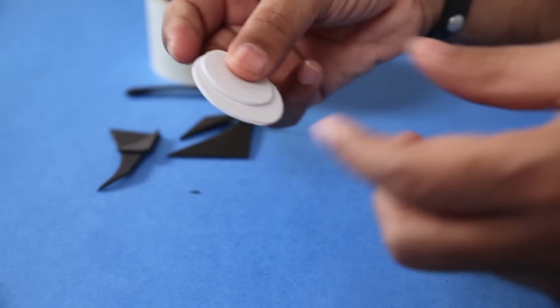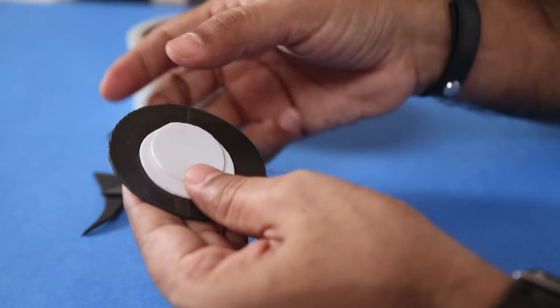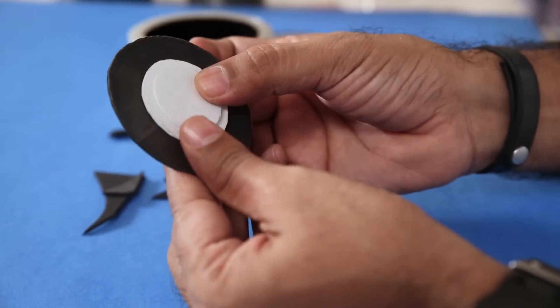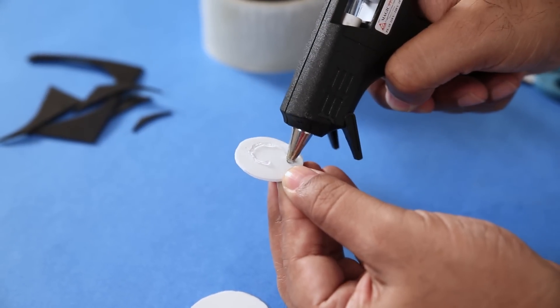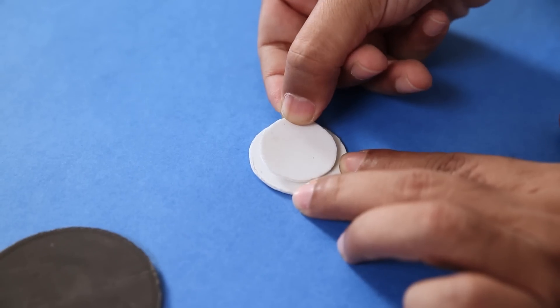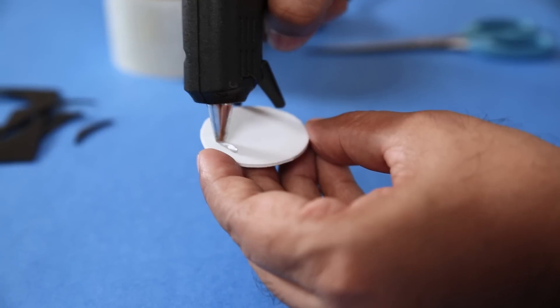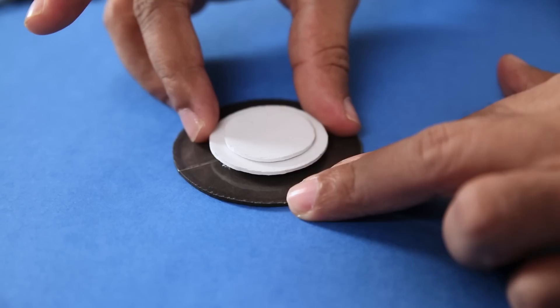And with these three balls, we will get the detail of our pokeball. So let's stick them. To stick the balls, I'm using a hot glue gun. Just be careful when you're working with a glue gun. The glue is really hot. So don't hurt yourself.